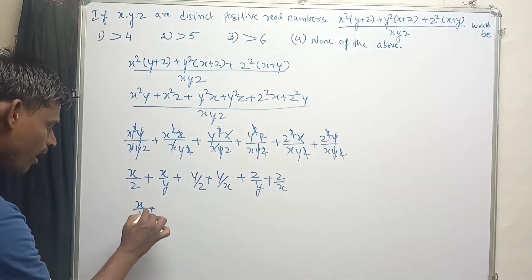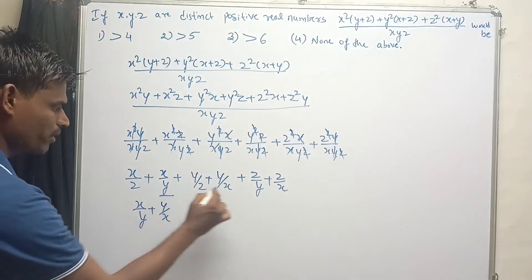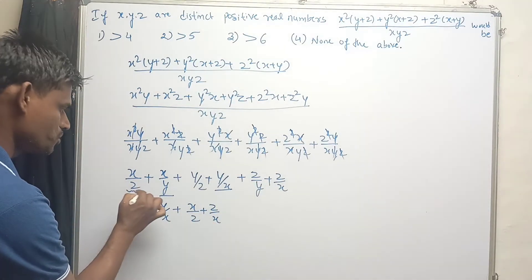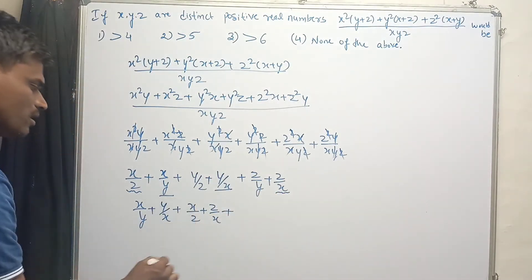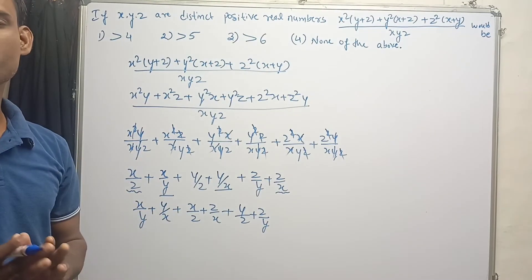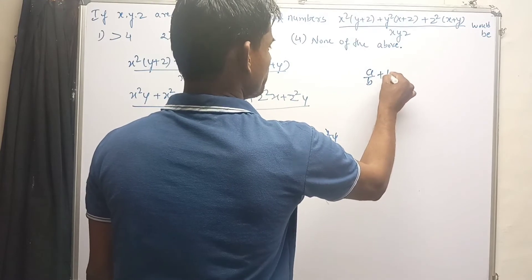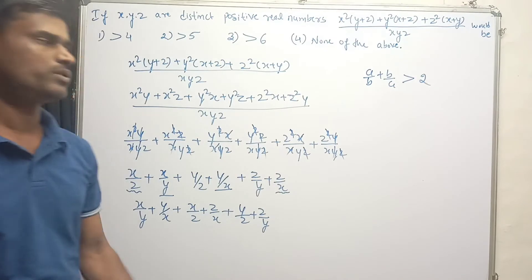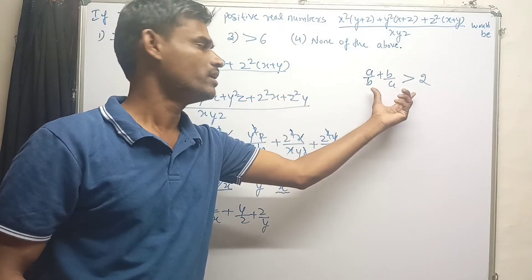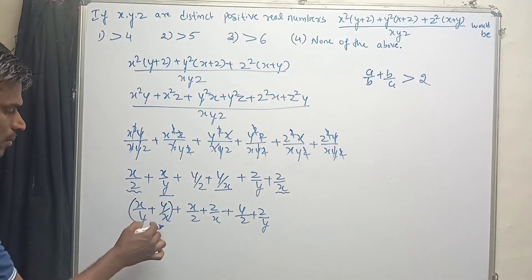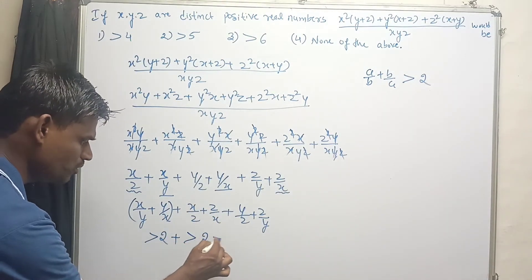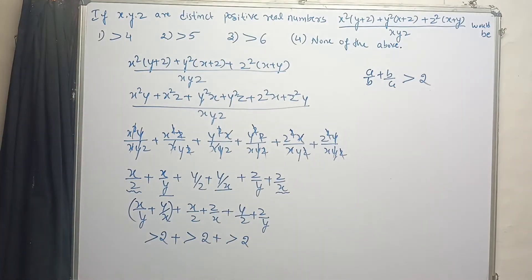By rewriting it, I am going to write x over y plus y over x — these two terms first — then x over z plus z over x, and at last y over z plus z over y. Now we know that for any two distinct real numbers, a over b plus b over a is always greater than 2, whatever two real distinct numbers we take.